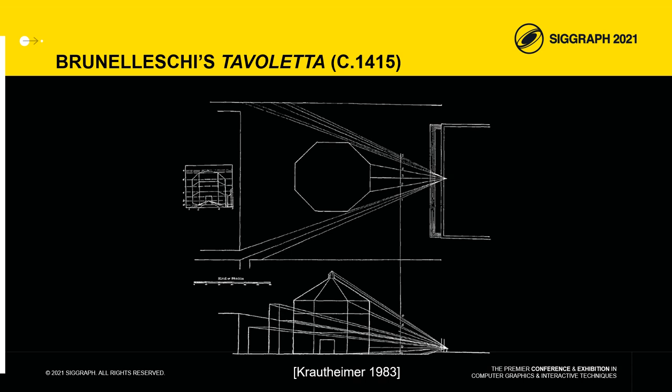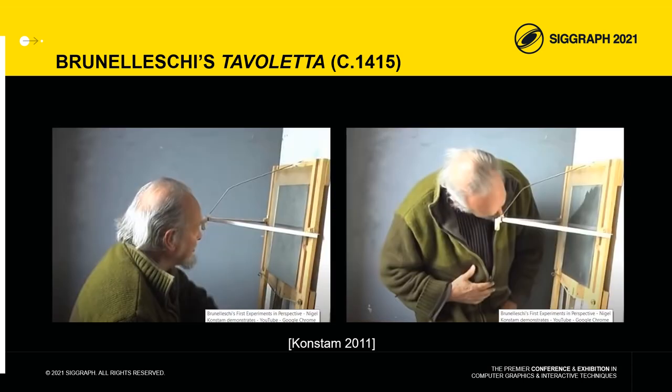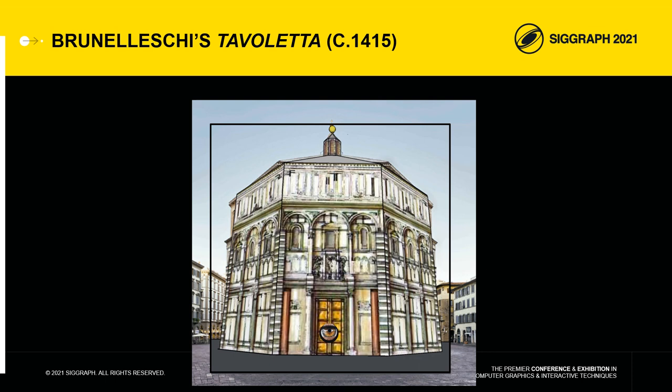Some art historians believe that Brunelleschi constructed the representation geometrically by combining a plan view and an elevation view of the Baptistery. Others believe that he painted the Baptistery directly on a mirror with his back to the Baptistery. In any case, this device certainly contributed to the discovery of the first laws of perspective, such as that of the horizon line passing through the principal point, represented by the reflected eye, and that of the orthogonals converging towards the principal point.